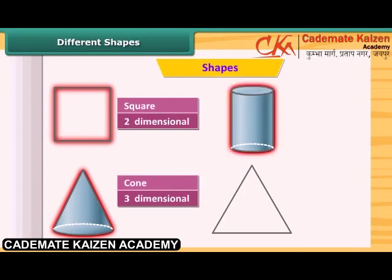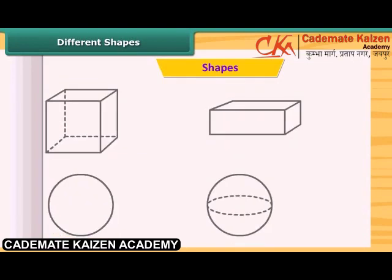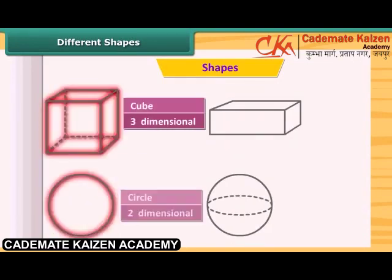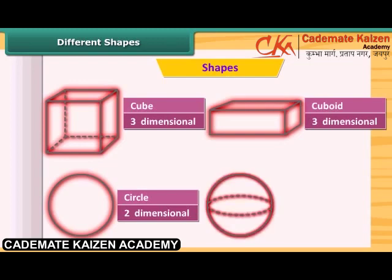This is a cylinder — this is also three-dimensional. This is a triangle, and this is two-dimensional. Circle — two-dimensional. This is a cuboid, and it is three-dimensional. And this — is it a sphere? Yes, this is a sphere, and it is three-dimensional.